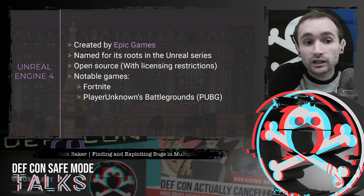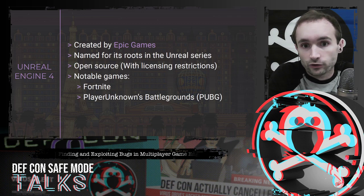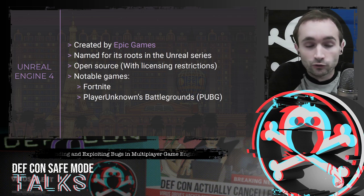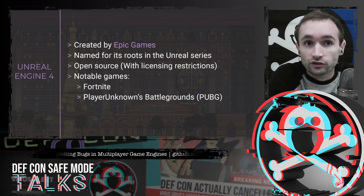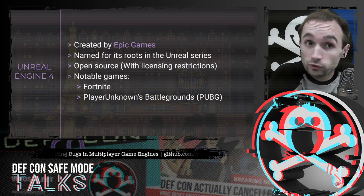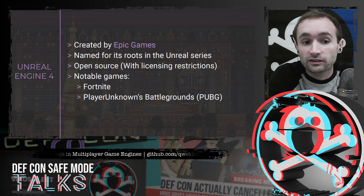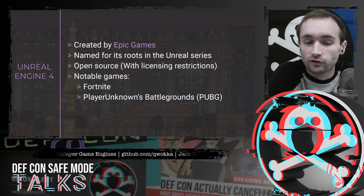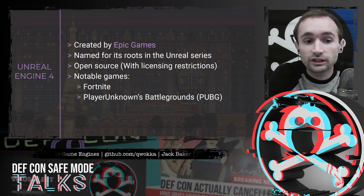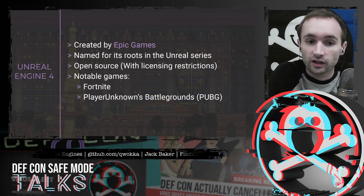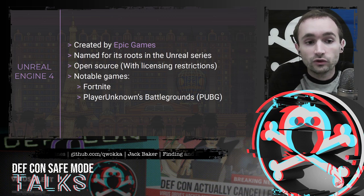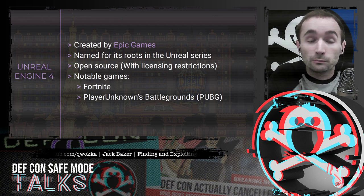Unreal Engine 4 is created by Epic Games. It's named for its roots in the Unreal series and it is open source, with some licensing restrictions. But from the perspective of just looking for bugs, all the code is out there for us to look at. Two big notable games right now built using Unreal Engine 4 are Fortnite and PUBG.